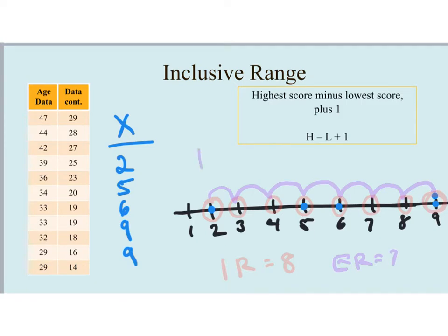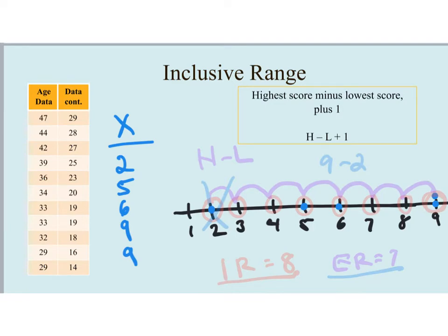The exclusive range is always one unit lower than the inclusive range. When we take highest minus lowest, we are by definition removing or excluding the lowest score — doing 9 minus 2 gets rid of the 2. That causes the exclusive range to always be one unit lower. Also note that all variables discussed are quantitative; the inclusive and exclusive ranges, as well as all measures of variability in this video, are only useful for quantitative data.